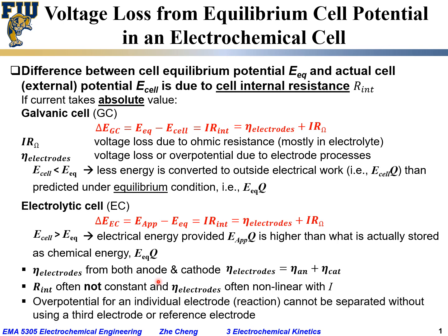The overpotential for an individual electrode in an electrochemical cell cannot be separated without adding a third electrode, sometimes called a reference electrode, because the measured potential is always across two electrodes. If you want to pinpoint the exact voltage loss for an individual electrode's half-cell reaction, you cannot do so without using a reference electrode as a third electrode. We will discuss this point in greater detail later in the course.